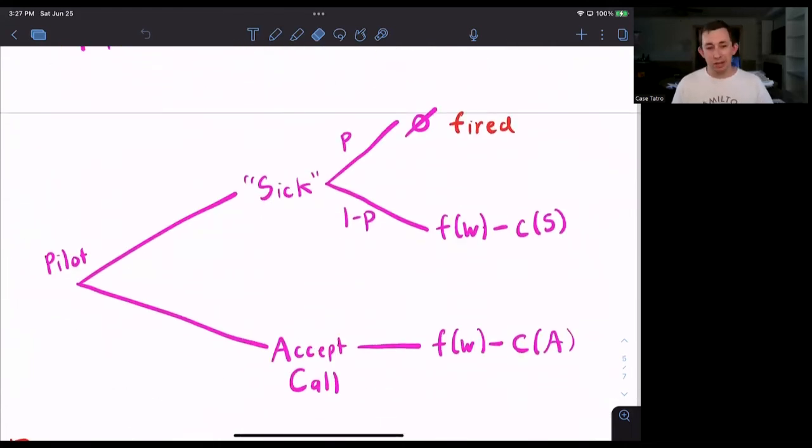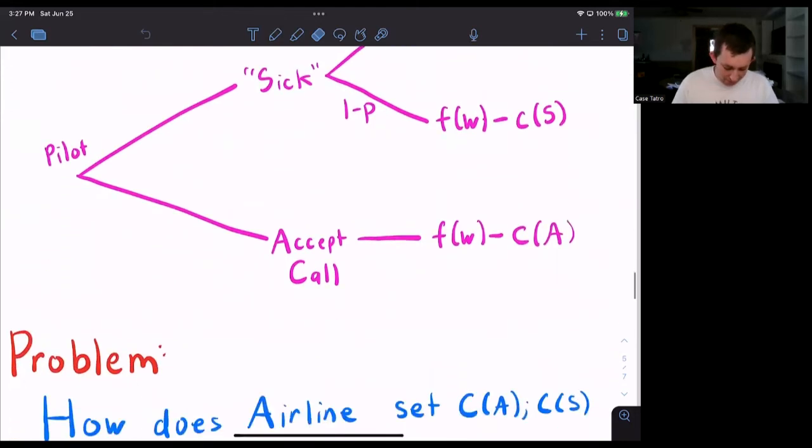So we have this little game tree where the pilot calls out sick in quotes. There's a p chance that they were faking and they get fired. There's a 1 minus p chance that they are actually sick or don't get found out, and they have a payoff of F of W minus C of S. Or they can accept and pay the cost of accepting.